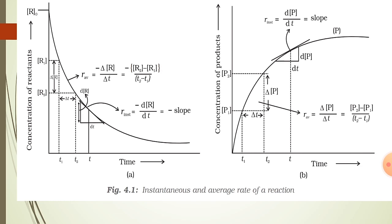Consider two different graphs. In the first graph, R0 is the initial concentration. As time goes on, the concentration of the reactant decreases. At time T1 its concentration becomes R1, and at time T2 its concentration becomes R2. Using these two data points we can determine the average rate of reaction: minus (R2 minus R1) divided by (T2 minus T1), which represents the decrease in the concentration of the reactant.